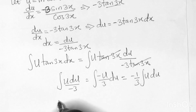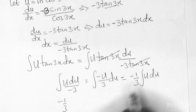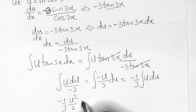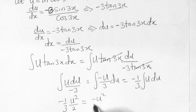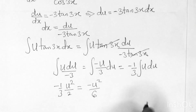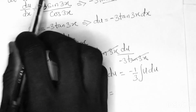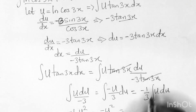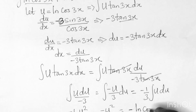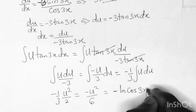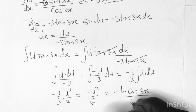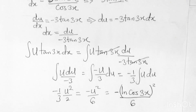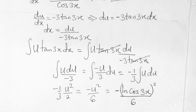This simplifies to minus 1/3 · ∫ u du. Integrating u gives u²/2, so we get minus u²/6. Substituting u = ln(cos3x) back, the final answer is minus [ln(cos3x)]² / 6 plus C.